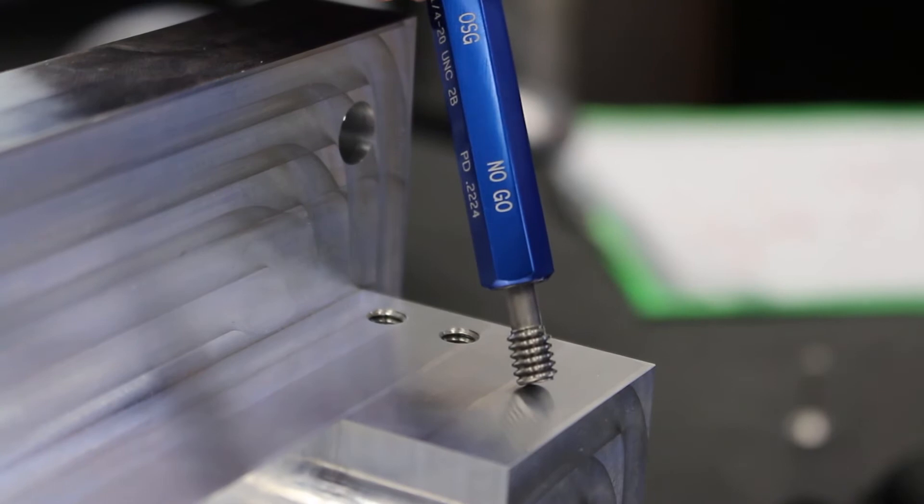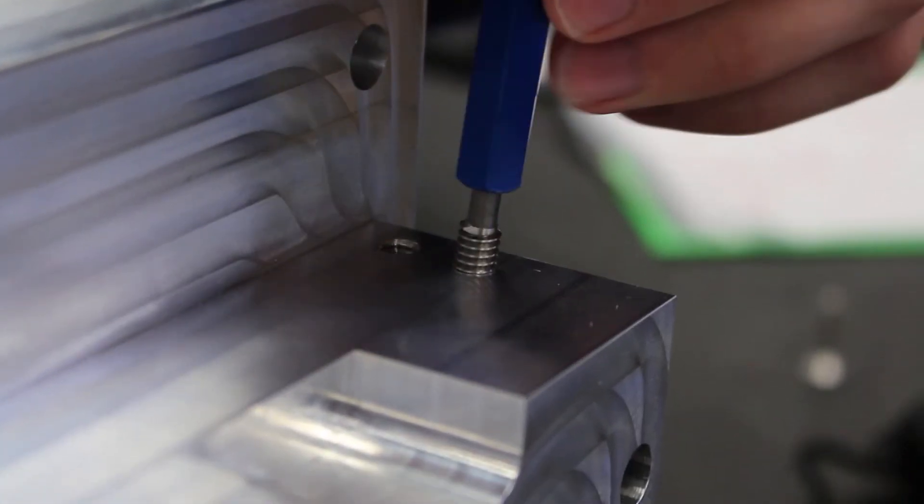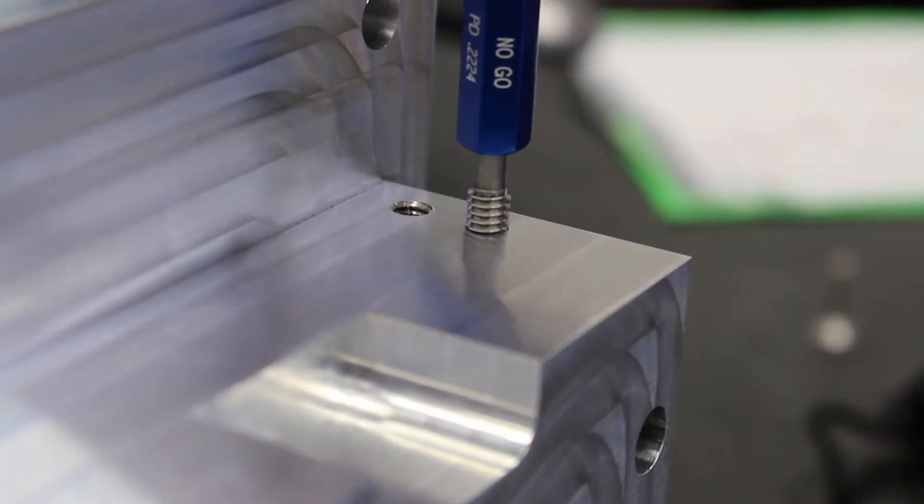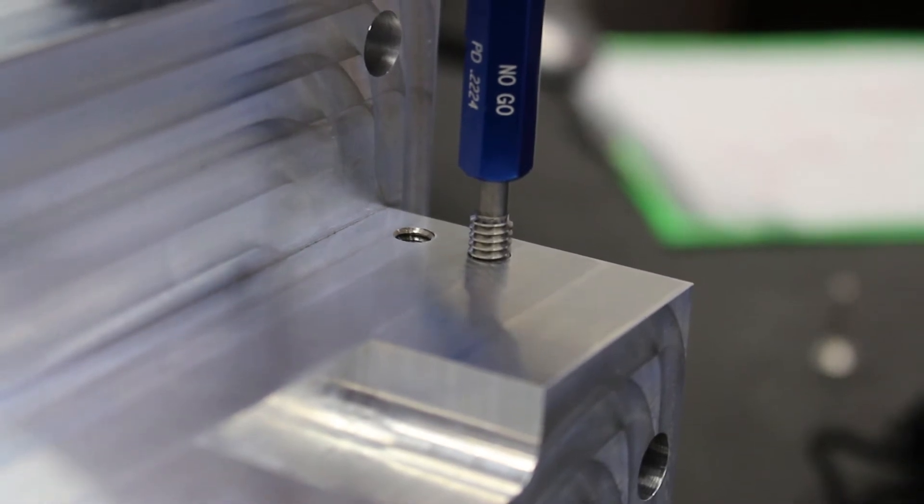Next insert the no-go side and turn it as many revolutions as it will turn. It should not turn more than two revolutions. If it does the threads need to be redone.